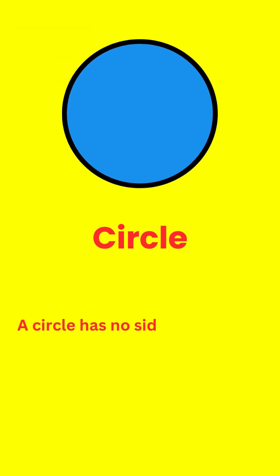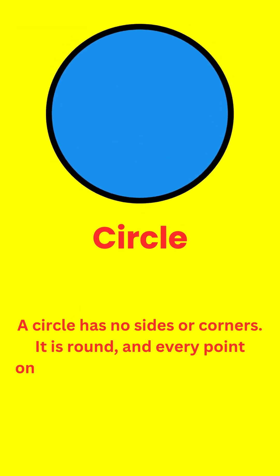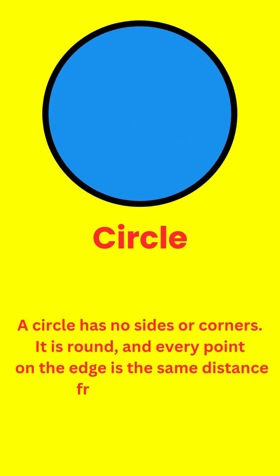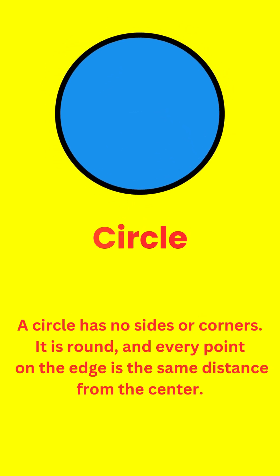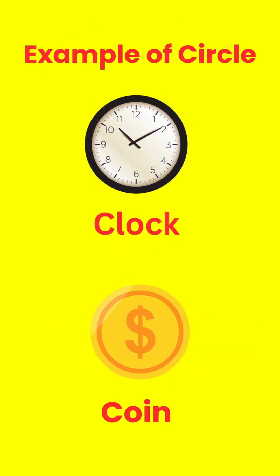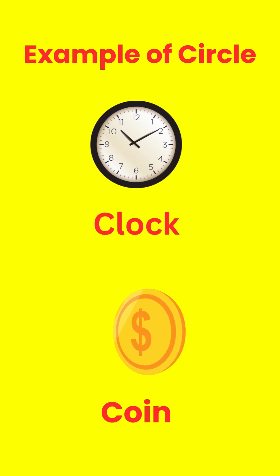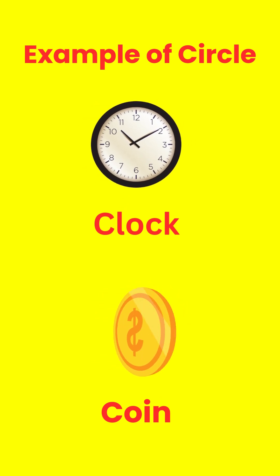Circle. A circle has no sides or corners. It is round, and every point on the edge is the same distance from the center. Examples of circle in our daily life are clock and coins.